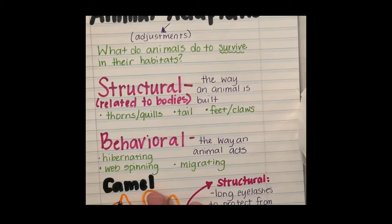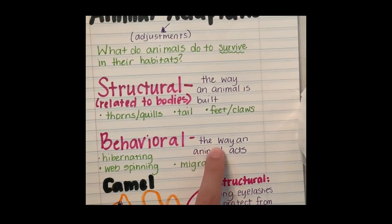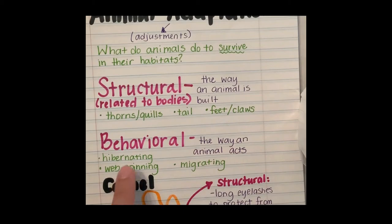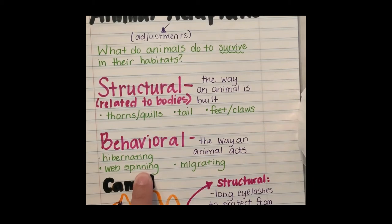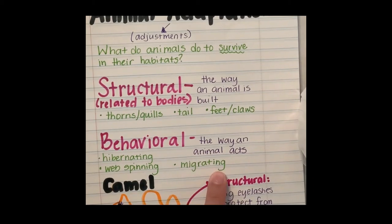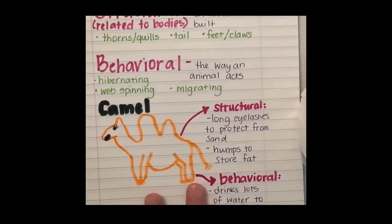Behavioral adaptations are actually showing the way an animal acts. For example: hibernating, like a bear hibernates in the winter; web spinning for spiders; and migrating — a lot of birds fly south in the winter so that they can be in much warmer climates during those winter months.